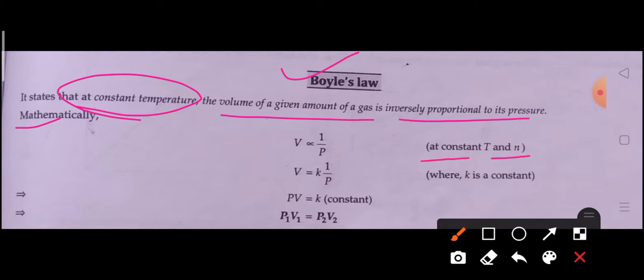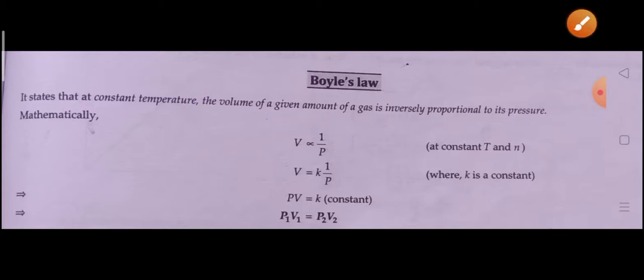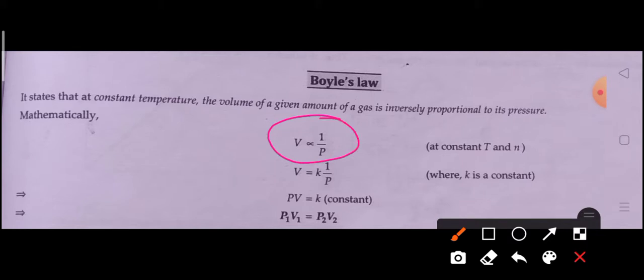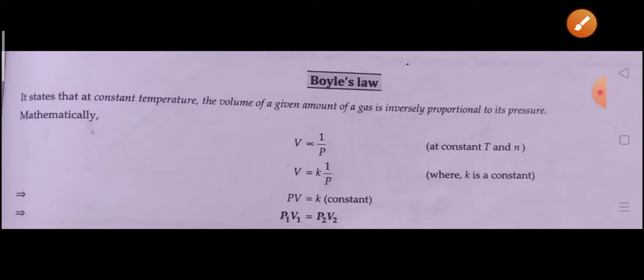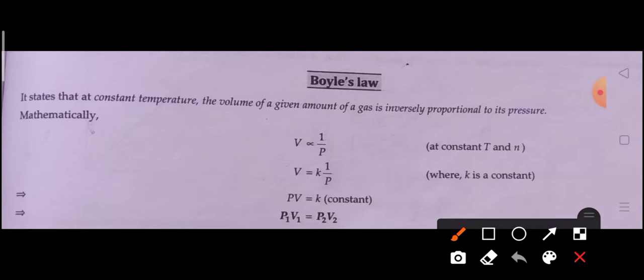Mathematically, at constant temperature and fixed amount of gas, V is inversely proportional to P. We can write V = K/P, where K is a constant. Rearranging, PV = K (constant).